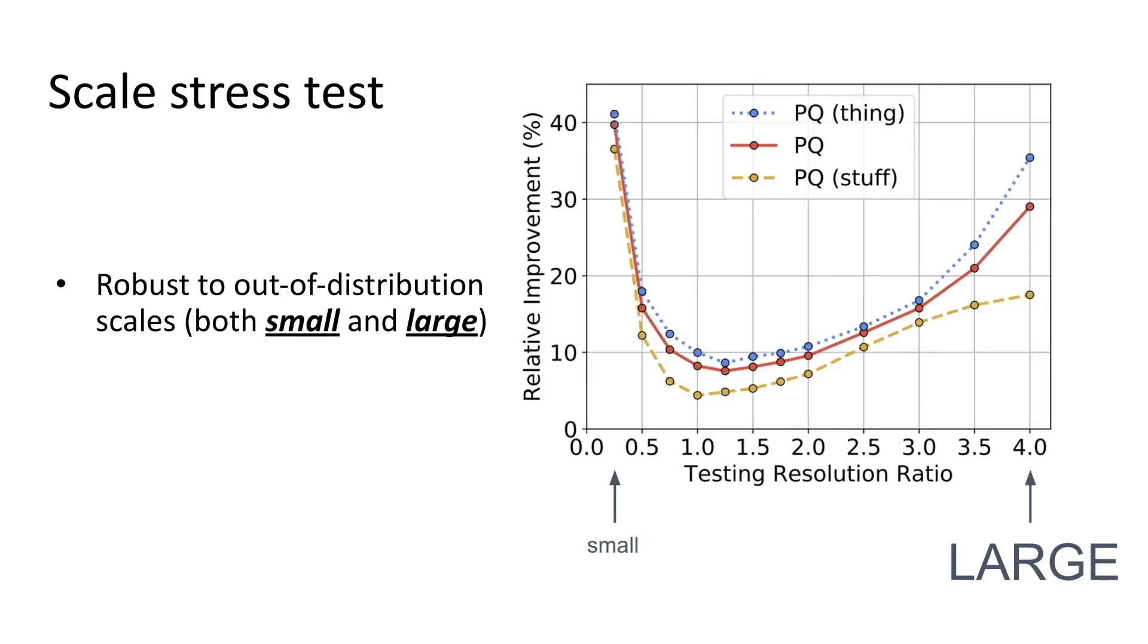In addition to standard benchmarks, we perform a scale stress test on COCO. We train models on one scale and directly test them on various out-of-distribution scales. We observe a huge relative improvement over Panoptic DeepLab on both small and large scales. It shows that Axial DeepLab is robust to challenging scales.